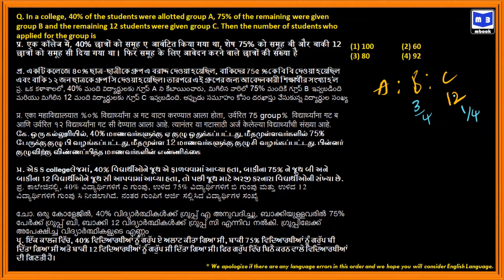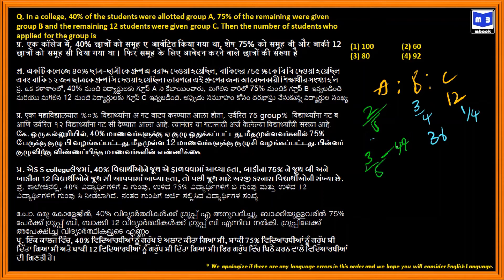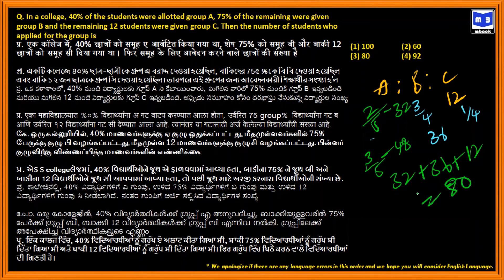So 1/4 is 12, which means 3/4 is 36. Since 40% of students were allotted to group A, that means 2/5 is allotted to group A, and 3/5 is allotted to both groups B and C. So B and C together is 36 plus 12 equals 48. That's 3 parts equal to 48, and 2 parts equals 32. Then 32 plus 36 plus 12 equals 80 in all.